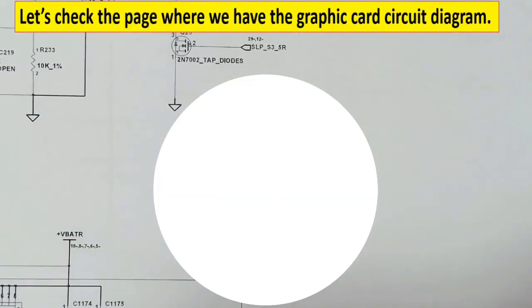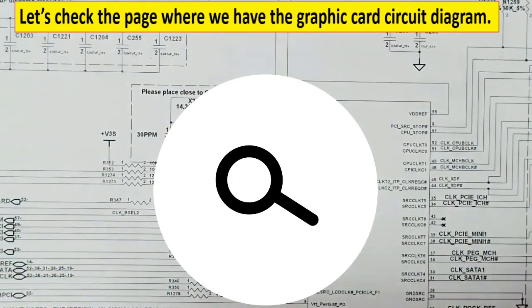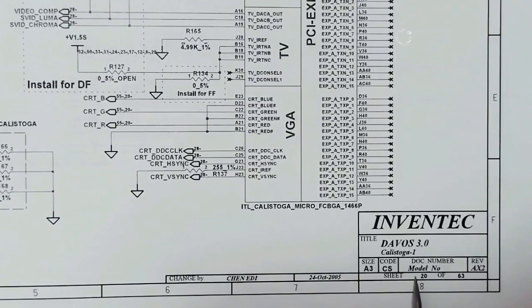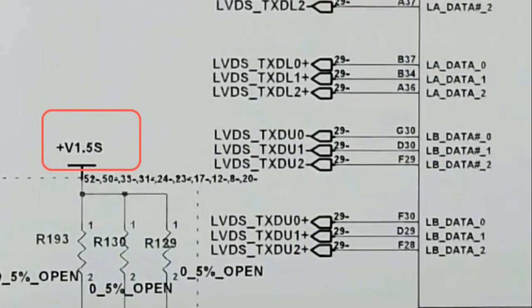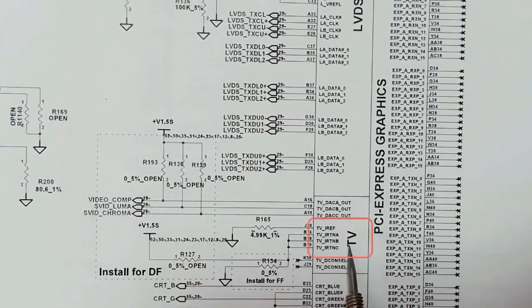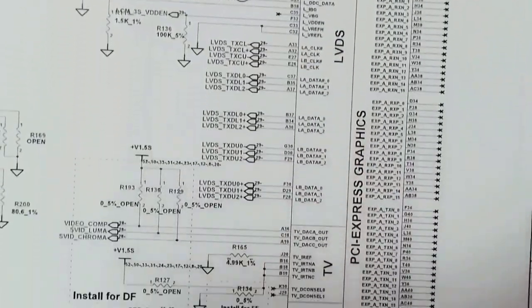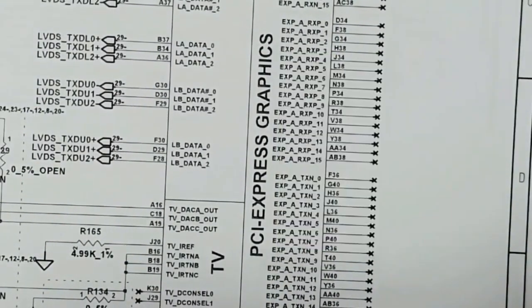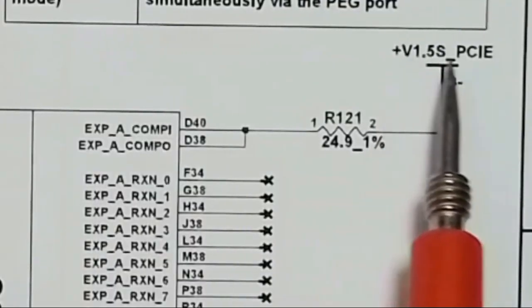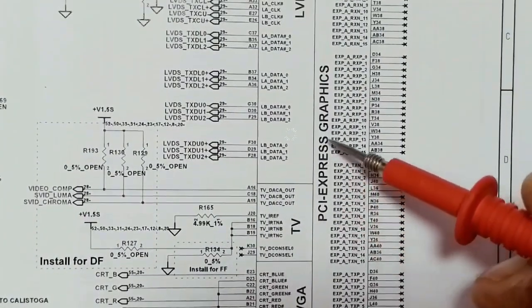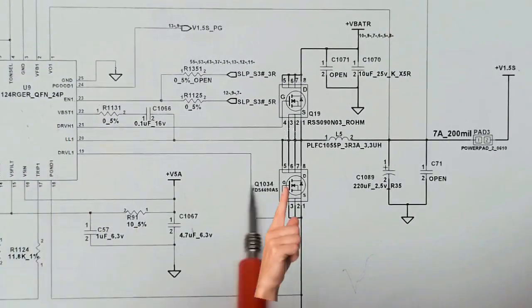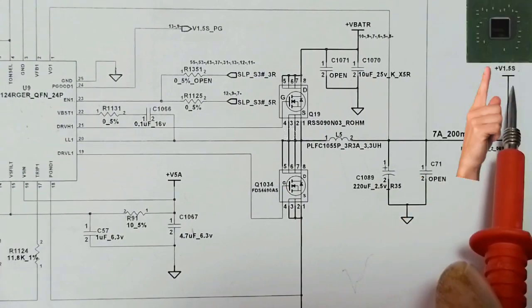Let's check page 20 of the circuit diagram where we have the graphic card circuit. Here we have plus 1.5V as the power for the graphic card — including the TV controller, the LVDS controller, and the VGA controller. We also have 1.5V for PCI Express graphics. So the shorted component can be the IC, the MOSFET, one of the two capacitors, or the graphic card.